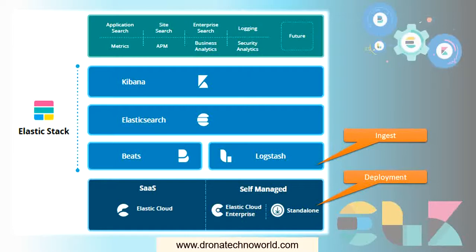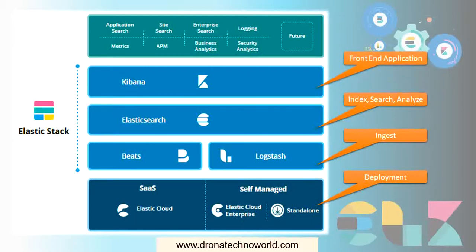The next components in this list are Beats and Logstash. If you remember from my earlier lecture, we discussed that these two components are used for injecting or converting data as input. So Beats and Logstash will inject the data to Elasticsearch. Elasticsearch is the core component of the Elastic Stack and is used for indexing the data and performing several operations such as searching and analyzing the data.